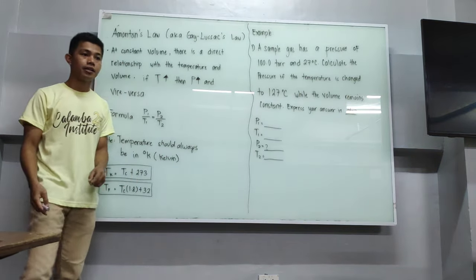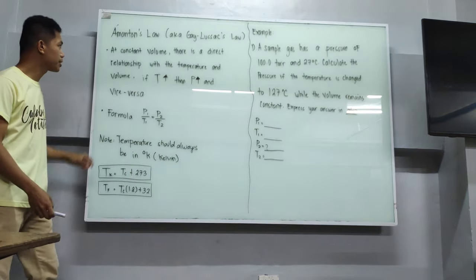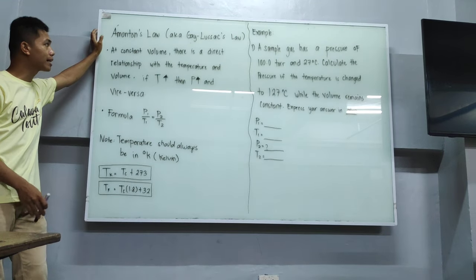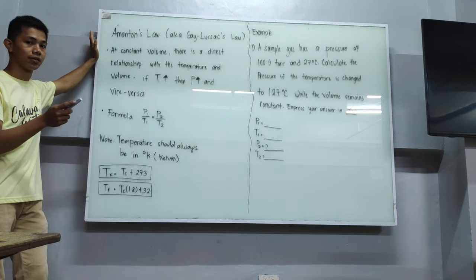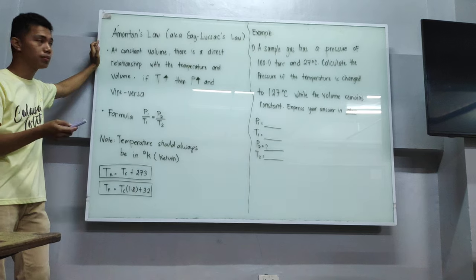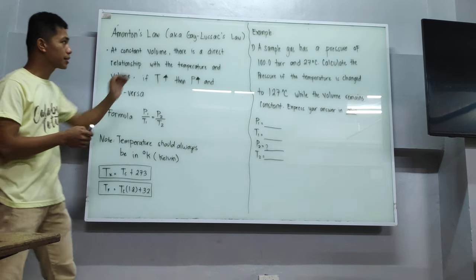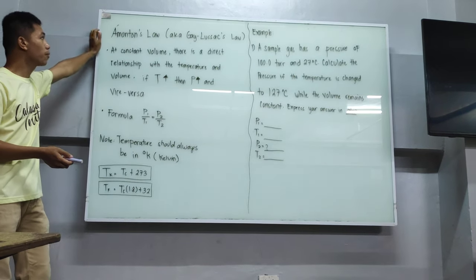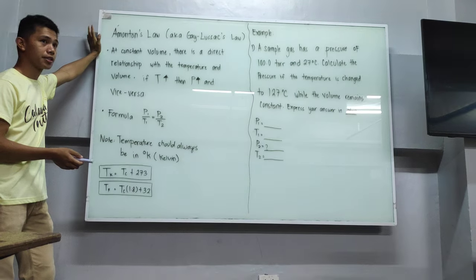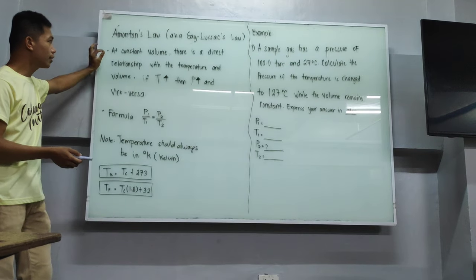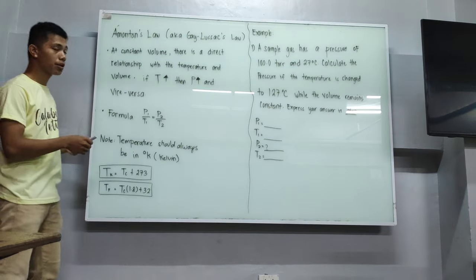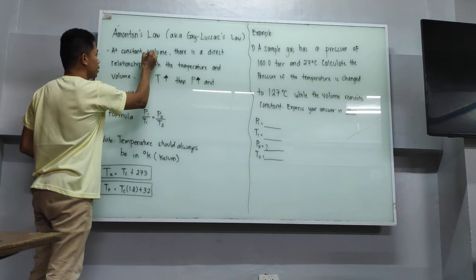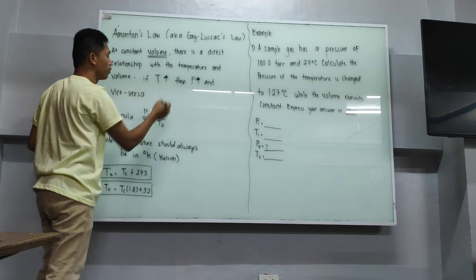Good morning, grade 10. Here we will be discussing Amontons' Law, also known as Gay-Lussac's Law. In some textbooks they use Gay-Lussac's Law, and in our textbook we use Amontons' Law. At a constant volume — always remember that in Amontons' Law, the constant is volume.